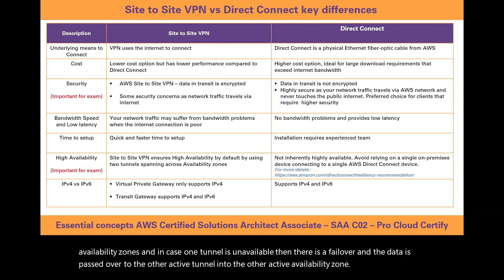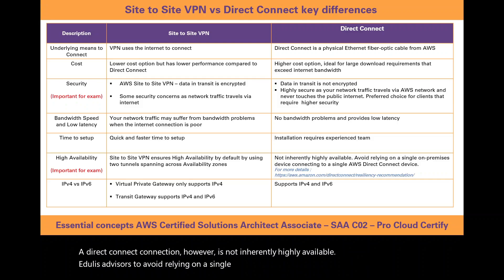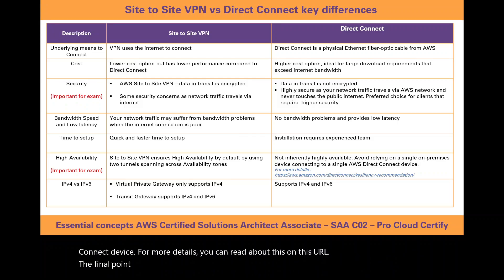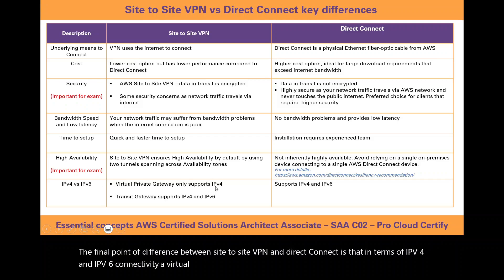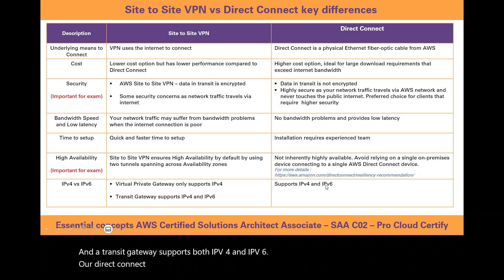A Direct Connect connection however is not inherently highly available. AWS advises avoiding reliance on a single on-premises device connecting to a single AWS Direct Connect device. Finally, in terms of IPv4 and IPv6 connectivity, a virtual private gateway only supports IPv4, a transit gateway supports both IPv4 and IPv6, and Direct Connect also supports both IPv4 and IPv6.